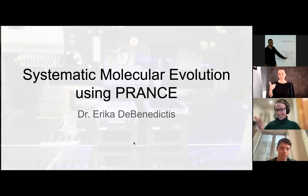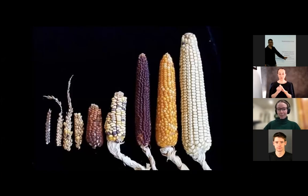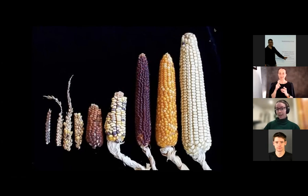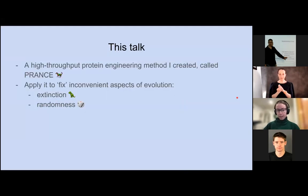Today, I'm going to talk about using evolution to do engineering, and I'm going to start with this classic visual — my favorite picture to communicate the power of directed evolution. This shows how humans have engineered corn. Way over on the left, this little thing called teosinte is the plant that people started cultivating 6,000 years ago. Over 6,000 years of diversification and selection, people engineered this plant to become the modern crop that accounts for 20% of the world's calories.